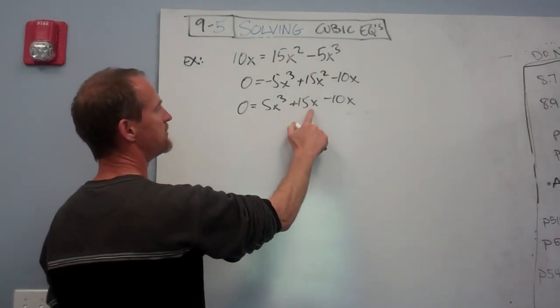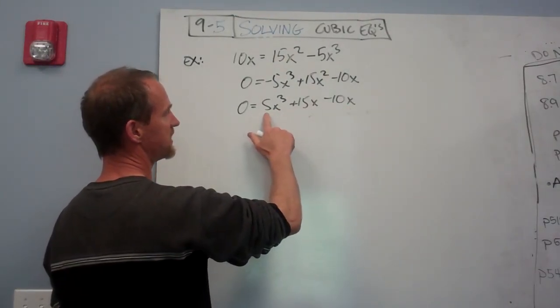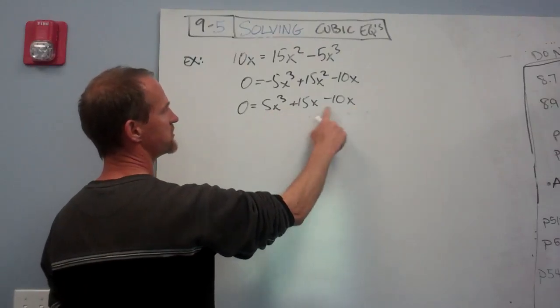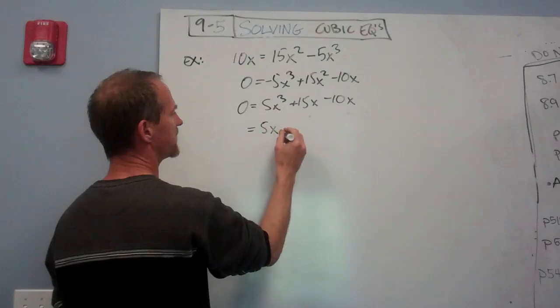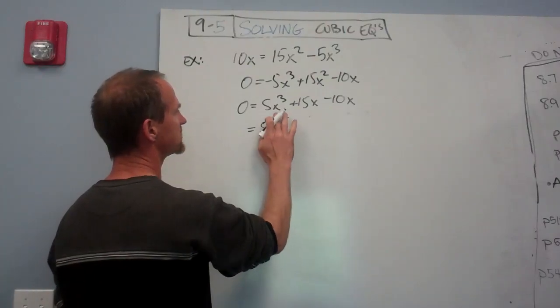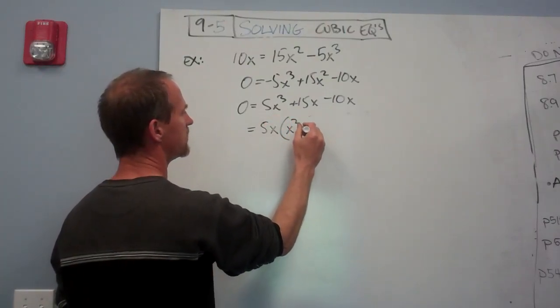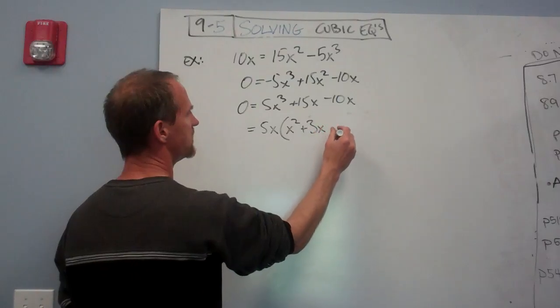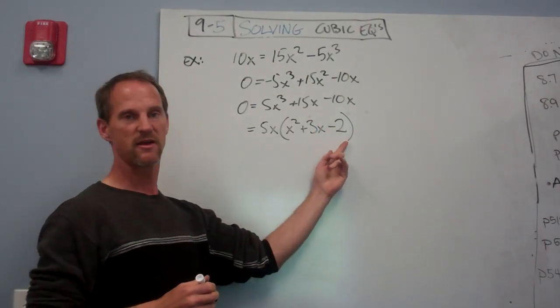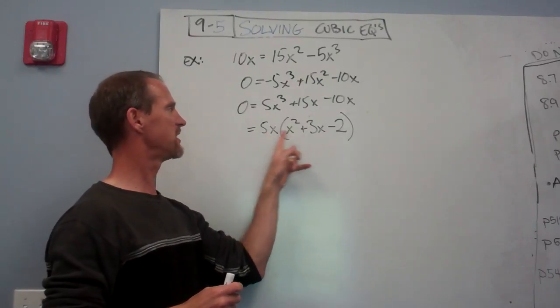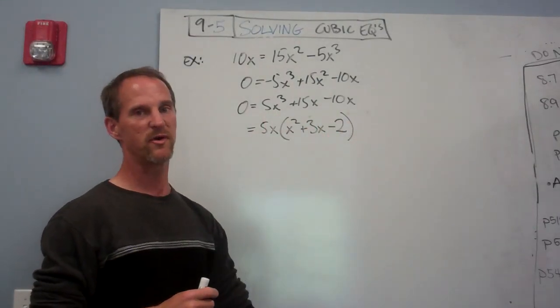Now you look and you say, can I take a common thing out of everywhere? And you can take a 5 out of all of these three numbers, and I can take an x out. So I'm going to factor out an x, a 5x. What's left behind is x squared plus 3x, then minus 2. Just be careful that you do the factoring accurately, and you can double-check by multiplying in, and you'll get exactly what you have up above.